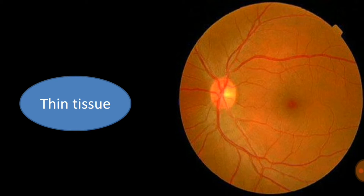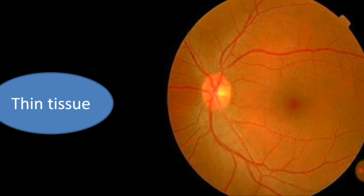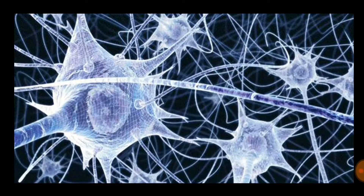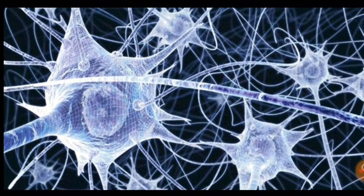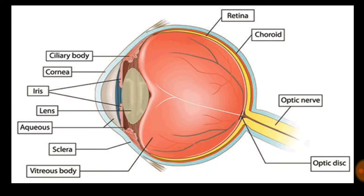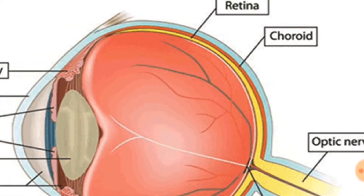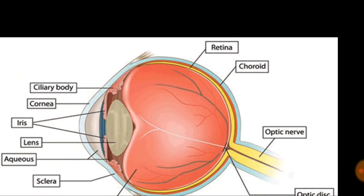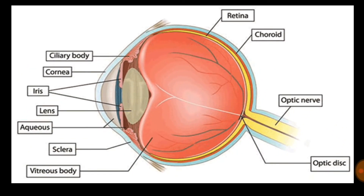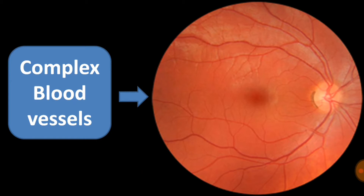The human retina is a thin tissue composed of neural cells that is located in the posterior portion of the eye. Because of the complex structure of the capillaries that supply the retina with blood, each person's retina is unique.